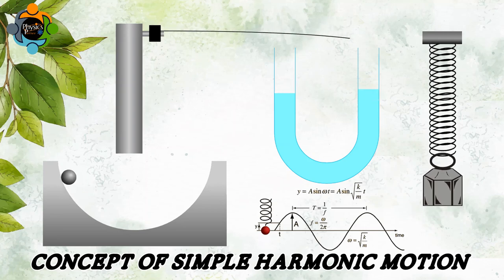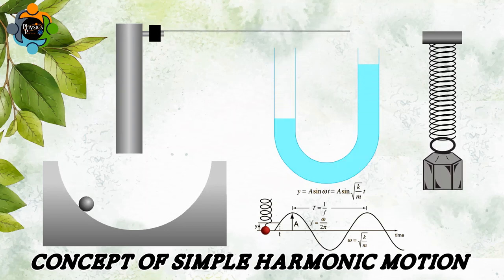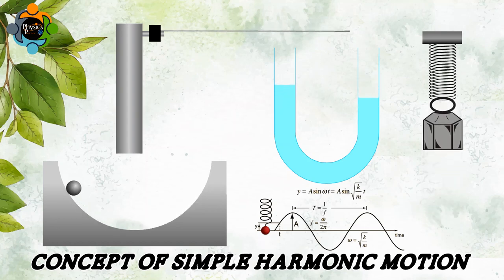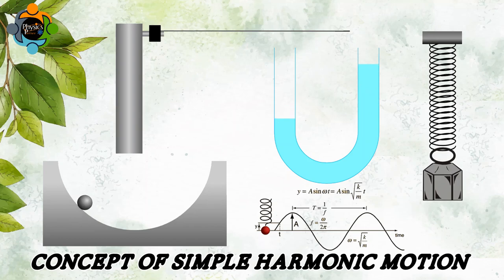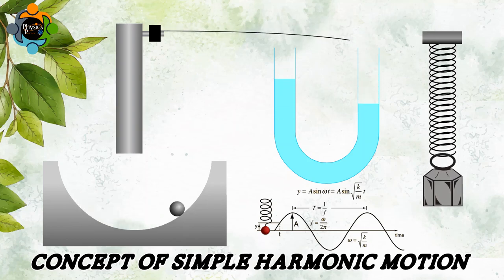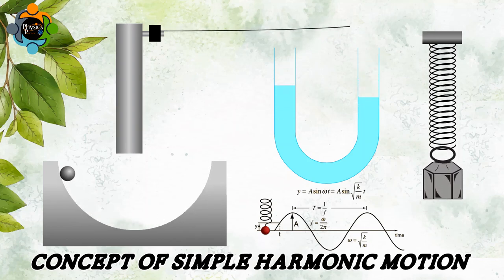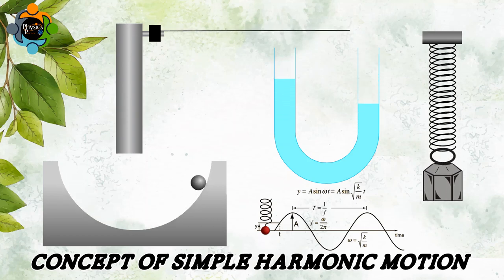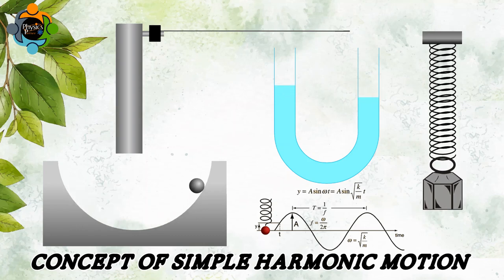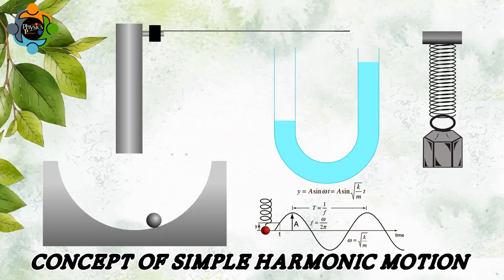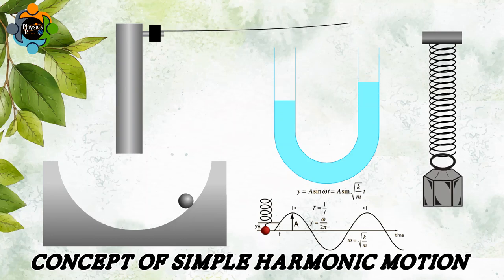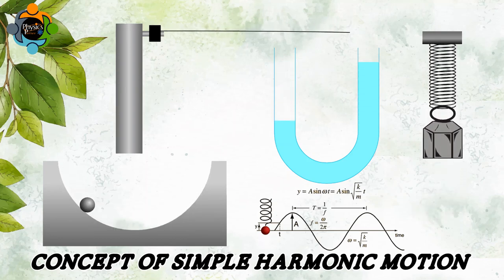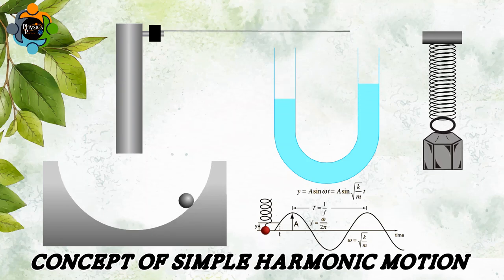Let's dive into the concept of simple harmonic motion. The concept can be used to explain the return to the equilibrium position of various types of systems. Whenever we push or pull a system out of its equilibrium position and release it, it returns back to its initial position. The crucial factor here is that the restoring force should be proportional to the displacement of the system from its equilibrium position. This force acts as a counterbalance when the system is displaced.